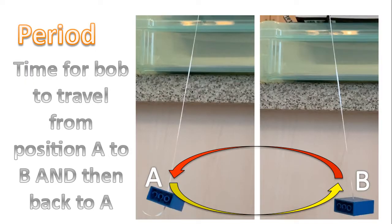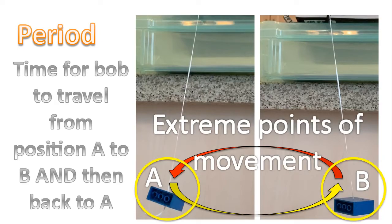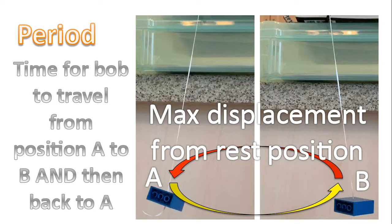Period. This quantity is a bit more challenging to measure. It's the time for the bob to travel from position A all the way to position B and then back to A. Now I've circled position A and B. These are the extreme points of movement for our pendulum bob. In other words, this is the maximum displacement of the pendulum from the rest position.